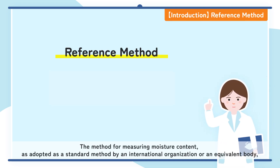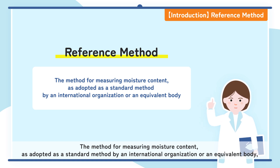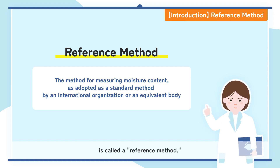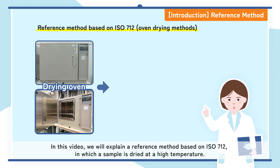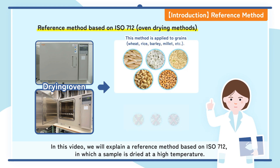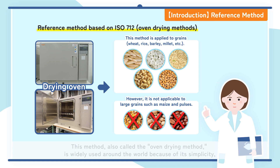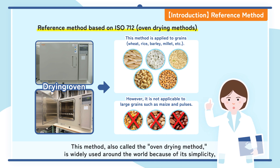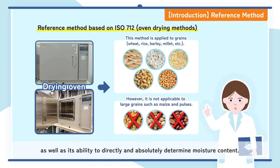The method for measuring moisture content, as adopted as a standard method by an international organization or an equivalent body, is called a reference method. In this video, we will explain a reference method based on ISO 712, in which a sample is dried at a high temperature. This method, also called the oven drying method, is widely used around the world because of its simplicity, as well as its ability to directly and absolutely determine moisture content.